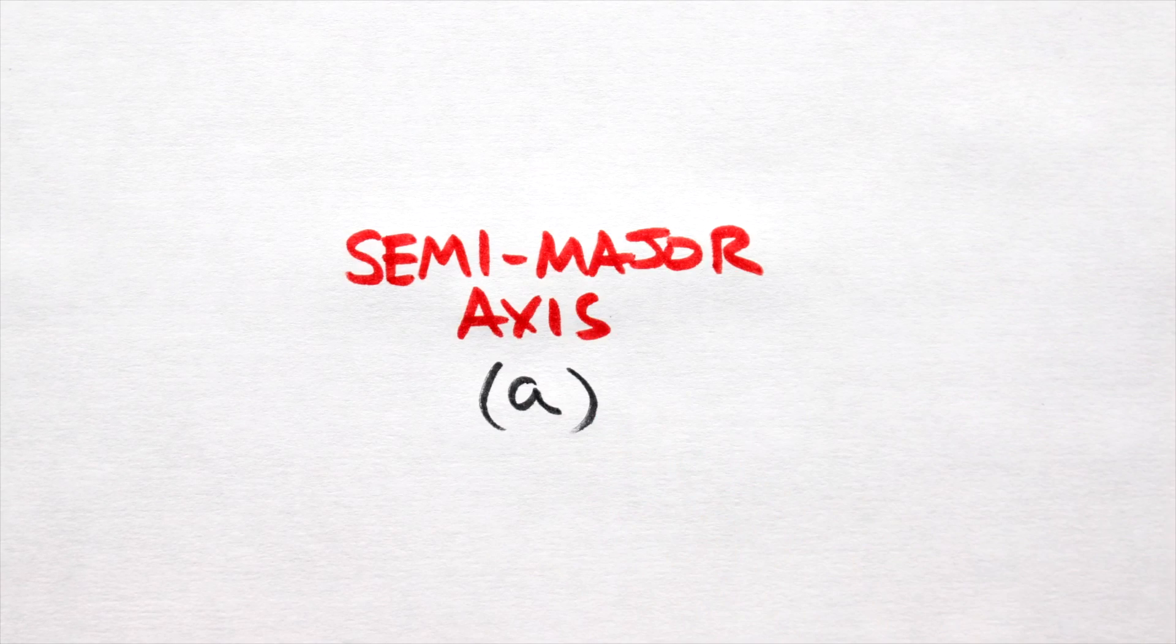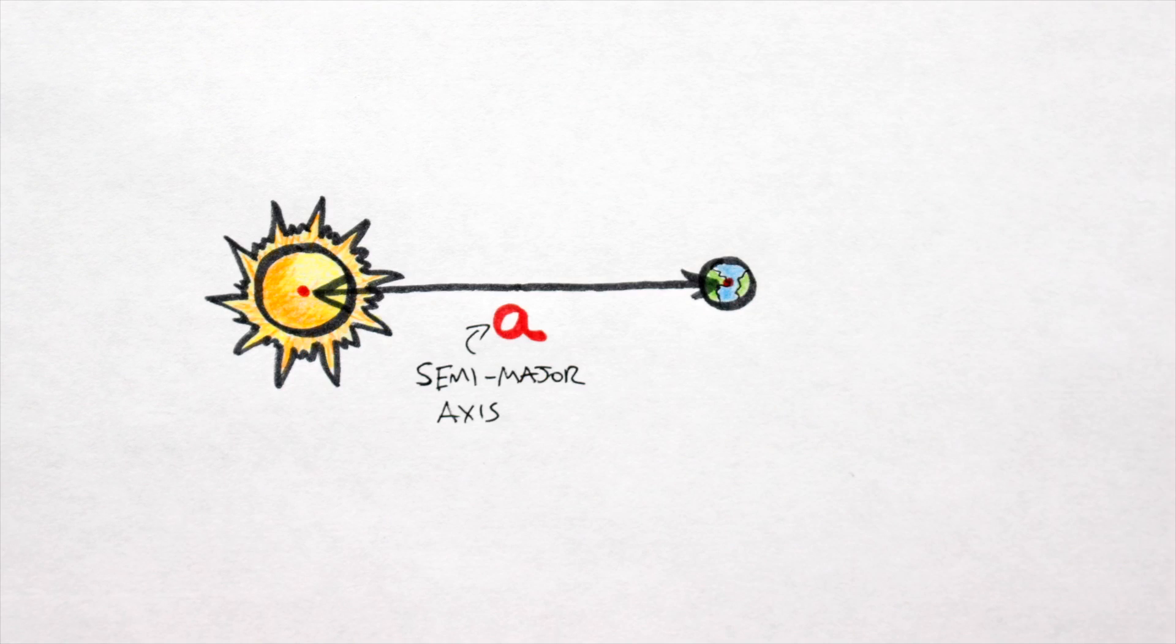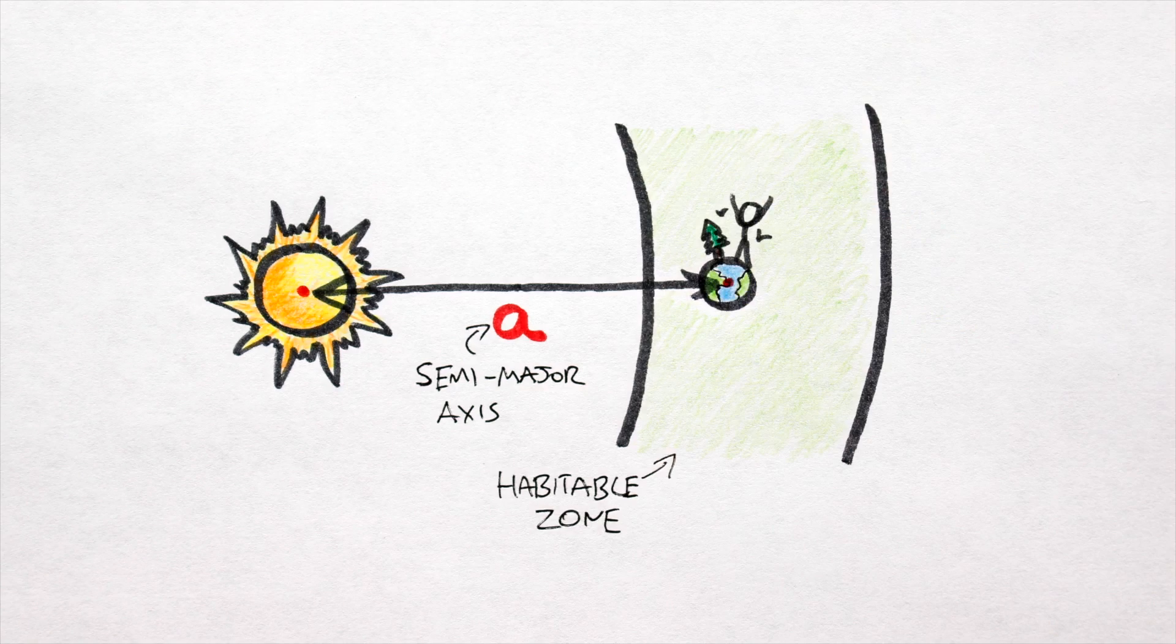Semi-major axis. Remember, the semi-major axis of an orbit, A, is the average separation between the planet and its star. Seeing as we're building a habitable planet, its semi-major axis must fall within the star's habitable zone. Why? Because life as we know it.